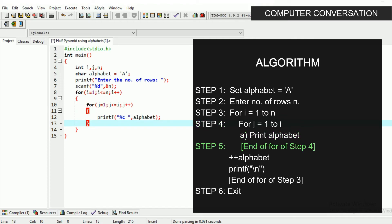Now write the most crucial part. Write plus plus alphabet which will increment the ascii value of alphabet with 1. Then write printf backslash n for new line. Close the brace for outer loop. Finally write return 0 and close the brace for the main function. The program is complete.